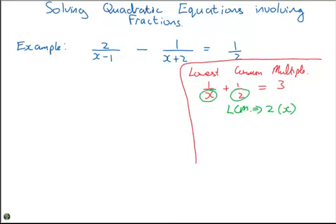Multiply everything that's under the line by each other. So in this case, if I have 1 over x plus 1 over 2 is equal to 3, I'm going to multiply everything by the two brackets x.